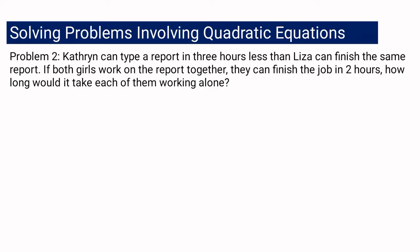For problem number 2: Katrin can type a report in 3 hours less than Liza can finish the same report. If both girls work on the report together, they can finish the job in 2 hours. How long would it take each of them working alone? Between Katrin and Liza, Katrin works faster — by 3 hours. So if Liza finishes the job in, for example, 10 hours, Katrin can finish it in 7 hours. We need to solve the given problem.